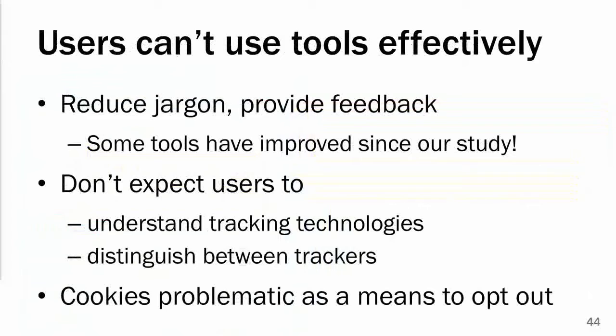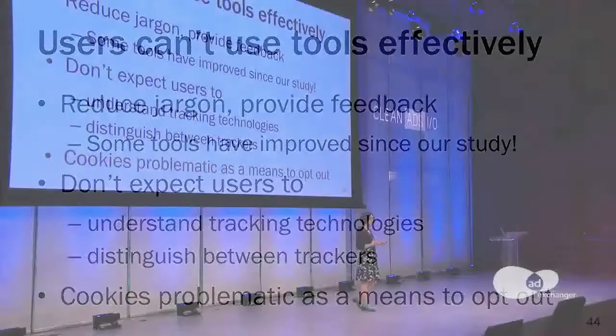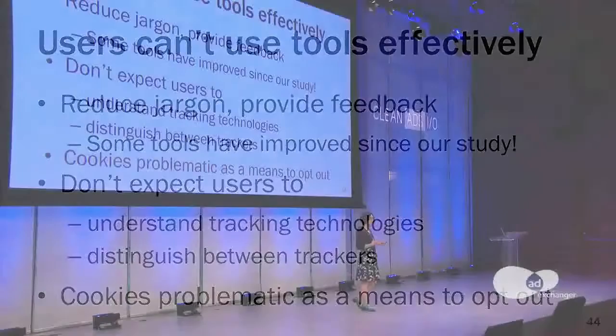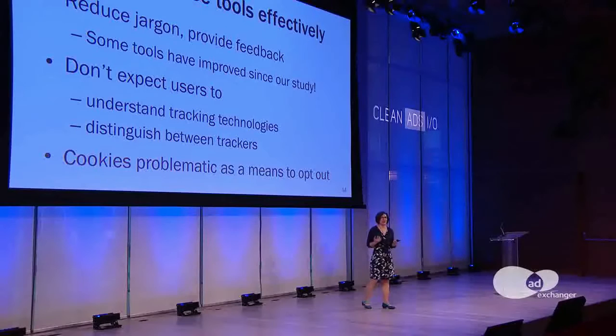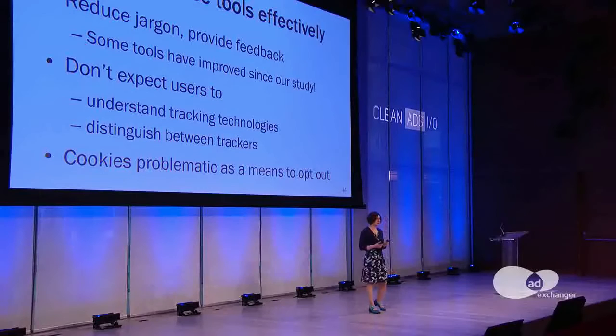In general, we found that users were unable to use these tools effectively. We recommended that tool providers try to reduce the jargon and provide feedback so people knew what the tool was doing, and we have seen that a lot of these tools have improved somewhat since our study. We also think it's important to realize that most of these tools are based on the idea that you pick which trackers you want to block, and I don't think this is working — consumers are really not in a position to make judgments between trackers from all these companies they've never heard of. We also learned that because consumers' instinct is just to delete cookies, the tools that rely on setting opt-out cookies are not really working very well.